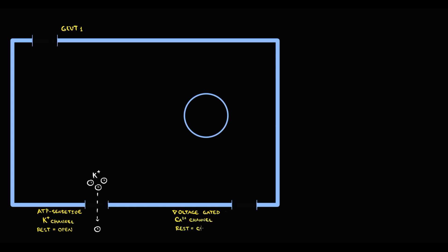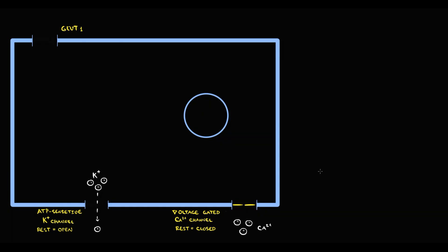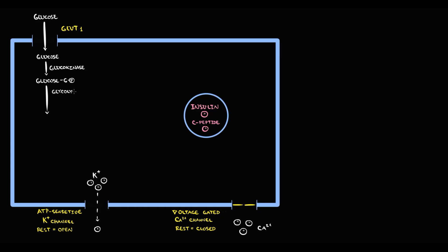Also beta cells have voltage-gated calcium channels, and in the rest state calcium channels are closed. So calcium, which is an extracellular ion, in rest state cannot enter into the cell. Also beta cells have intracellular vesicles, and these intracellular vesicles have already formed insulin and C-peptide. When glucose enters into the beta cell, glucose undergoes phosphorylation by glucokinase to glucose-6-phosphate.